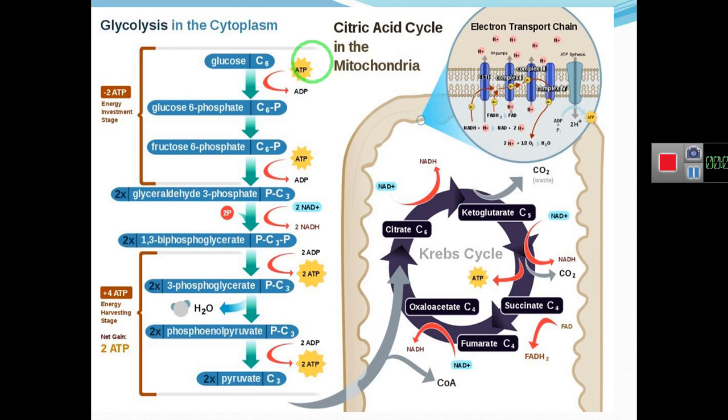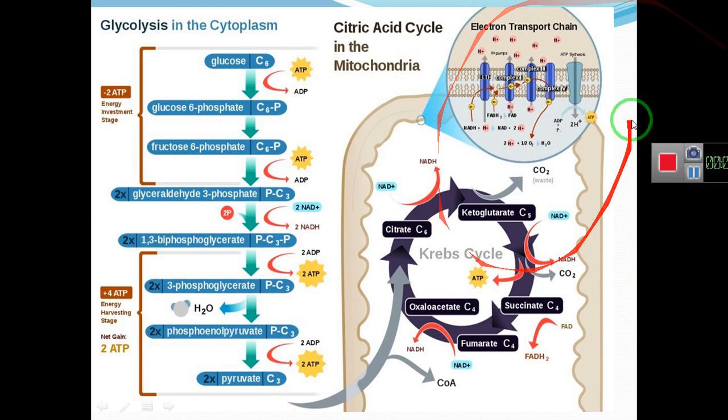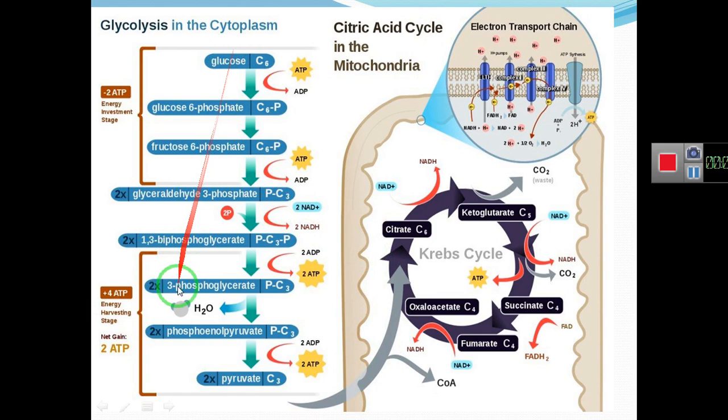Whenever our body cells synthesize ATP, we say that the cell is respiring — producing energy in the form of ATP. In our body, there are three main metabolic pathways that produce major amounts of energy as ATP. These pathways are glycolysis, the citric acid cycle, and the electron transport chain. Although other pathways also produce energy, these are the three major ones.